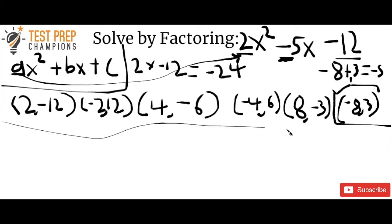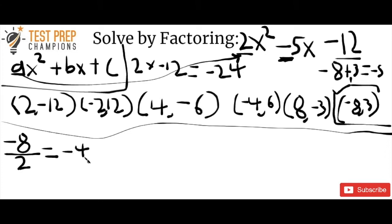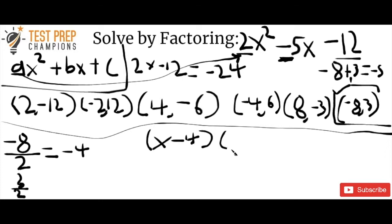Now divide both of these numbers by 2 and simplify if you can. So negative 8 divided by 2 gives you negative 4. Then for the 3, we can't simplify it, so we'll just leave 3 divided by 2. So we've got negative 4 and 3 over 2. Now write an x and put each of these terms: we do x minus 4, and also x plus 3 over 2.